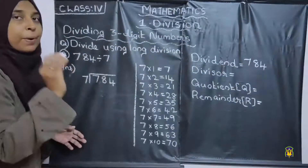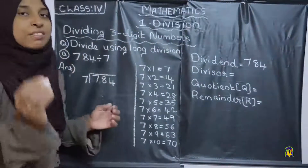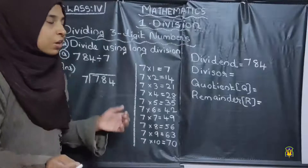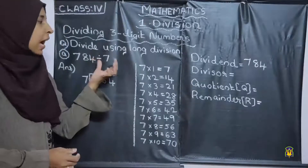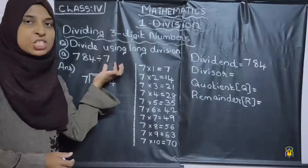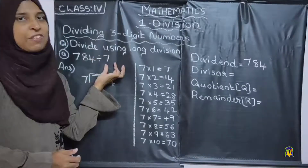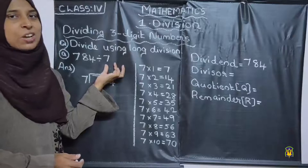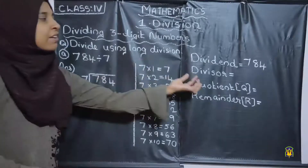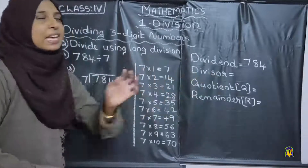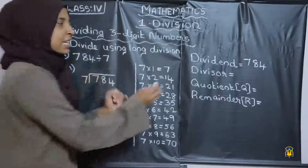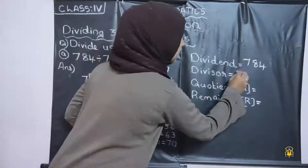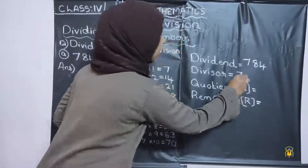The number to be divided is called the dividend, and the number by which it is divided is called the divisor. So in this case, the divisor is 7.